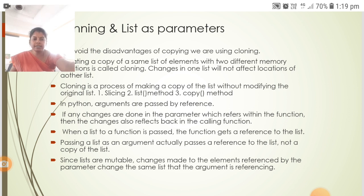When a list is passed to a function, the function gets a reference to the list. Passing a list as an argument actually passes a reference to the list, not a copy of the list. Since lists are mutable, changes made to the elements change the same list that the argument is referencing.